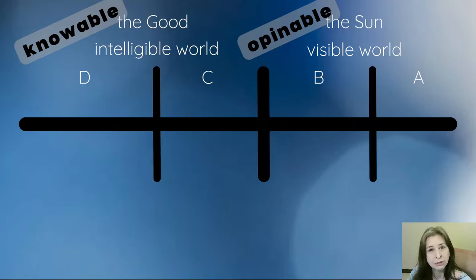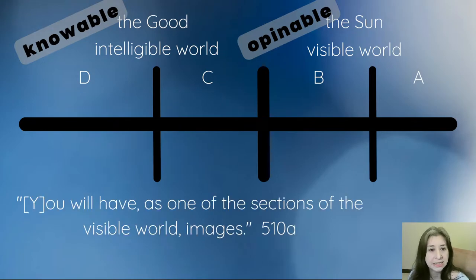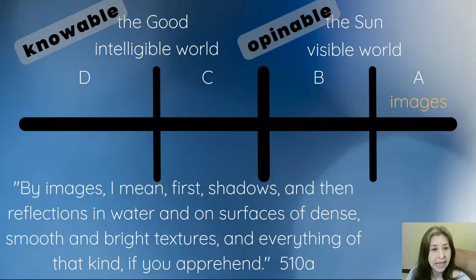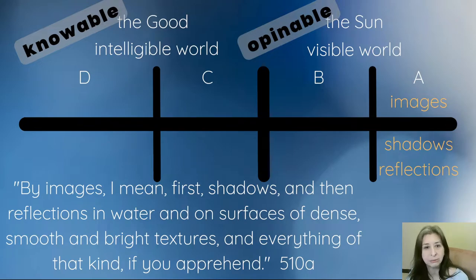Now I'm going to change the intelligible world labels to C and D for clarity. We'll start with A. He says you will have as one of the sections of the visible world images. By images, I mean first shadows and then reflections in water and on surfaces of dense, smooth and bright textures and everything of that kind. Most of you are aware that Plato loves to communicate in metaphors, in symbolism. We can probably imagine that he doesn't literally mean shadows and reflections. But for now, let's stick to the literal and put shadows and reflections here. As we go on, we can ask ourselves what this actually means.